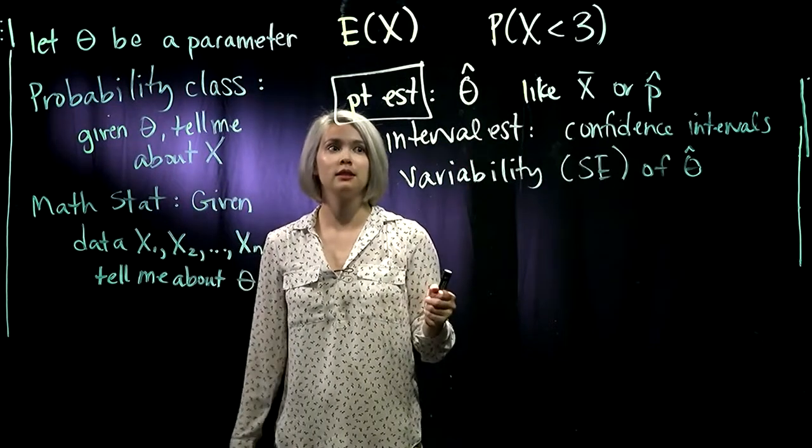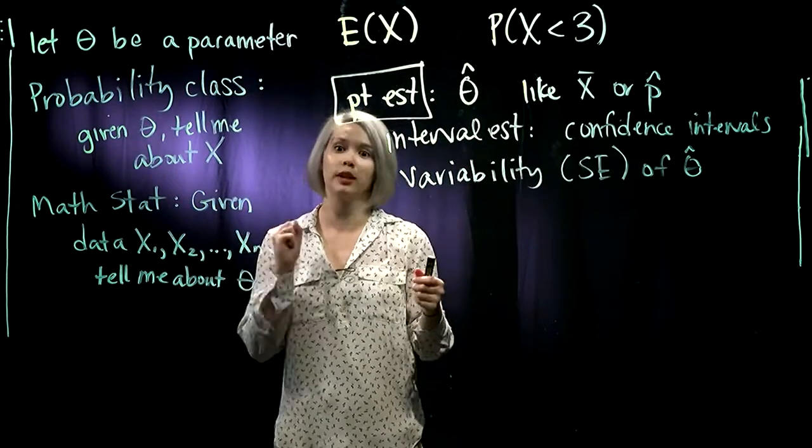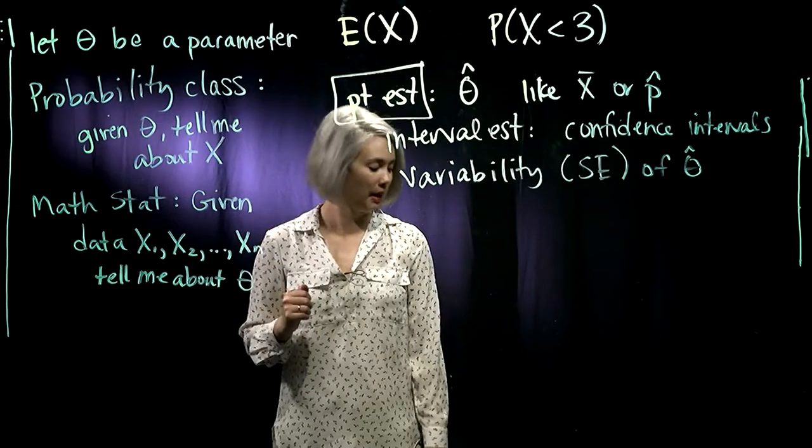So the first thing that we're going to be talking about in this class are point estimates. So point estimates are estimates of our parameter theta. So usually we might denote those like theta hat. And since it's a point estimate, that means we're only guessing one single point. So we're not guessing an interval, just one single point. So we're trying to look for our one best guess of what theta might be.